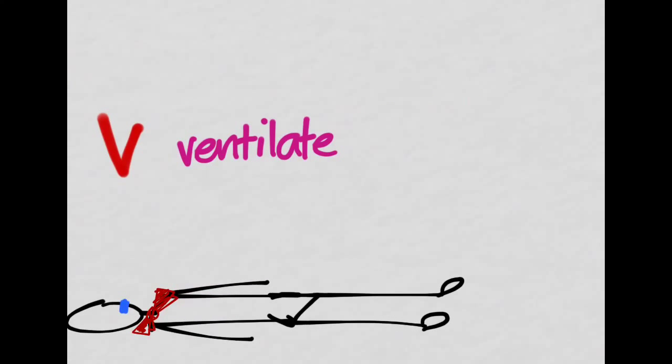Starting with V for ventilate. The first thing you want to do is put your patient on some O2, using a bag valve mask or 100% non-rebreather mask to get oxygen into the patient, because you know oxygen is not getting to the tissues.